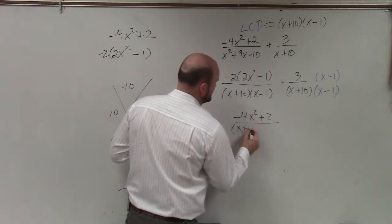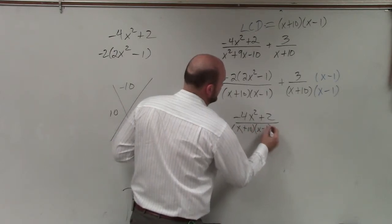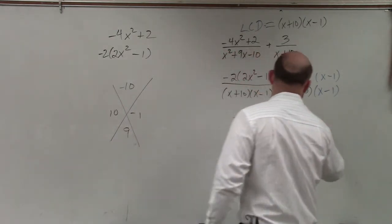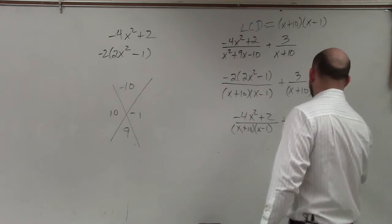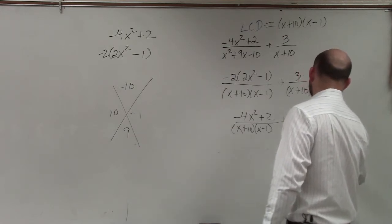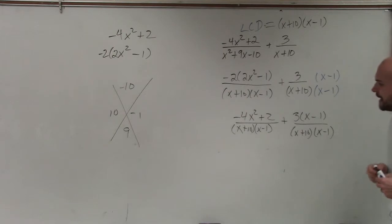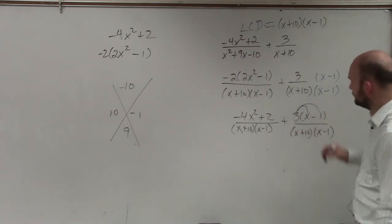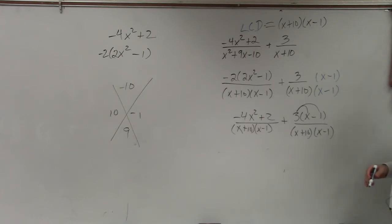So that's going to be over (x + 10)(x - 1) plus 3(x - 1) over (x + 10)(x - 1). Now, to finally simplify this, what I'm going to do is distribute this. So that's going to give me 3x - 1... I'm sorry, 3x - 3.